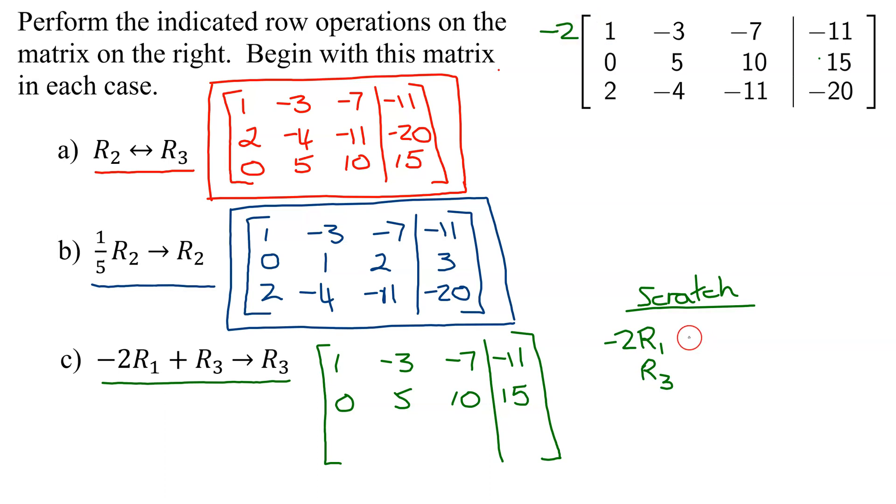Negative 2 times 1 is negative 2. Negative 2 times negative 3 is positive 6. Negative 2 times negative 7 is positive 14. And negative 2 times negative 11 is positive 22.